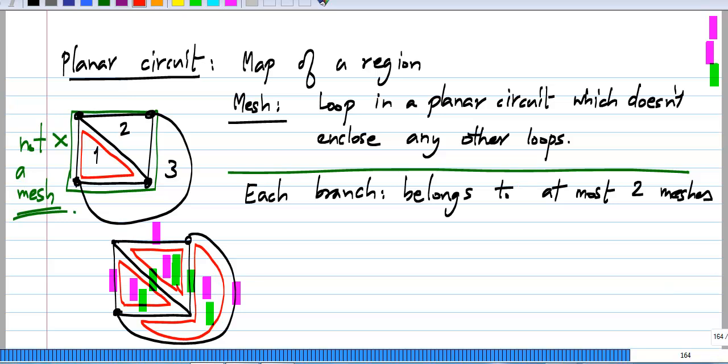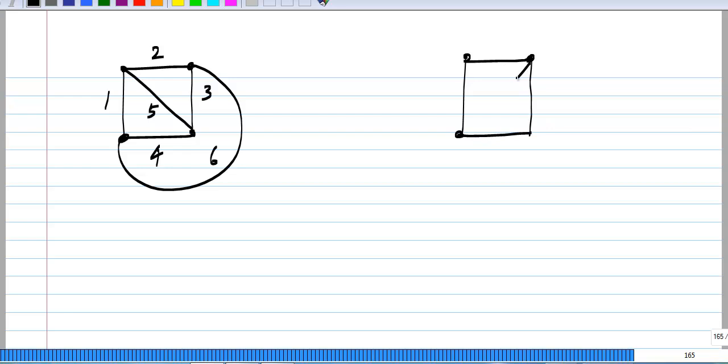What I mean is, let me redraw the same circuit in two different ways and also identify the branches. Let me name this 1, 2, 3, 4, 5 and also 6. You see that the exact same circuit can be written as that. I will number them the same. So now this is 5 and that is 6.